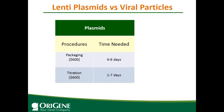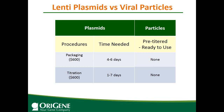Here is a comparison between lentiviral plasmid versus viral particles. For plasmid, you need a lentiviral packaging kit — commercially averaging about $600 — and it takes four to six days. If you want to measure viral titer, a titration kit costs another ~$600 and takes one to seven days. In comparison, if you order particles from OriGene, they come pre-titered and ready to use — you can directly add to your cells and save time and money.